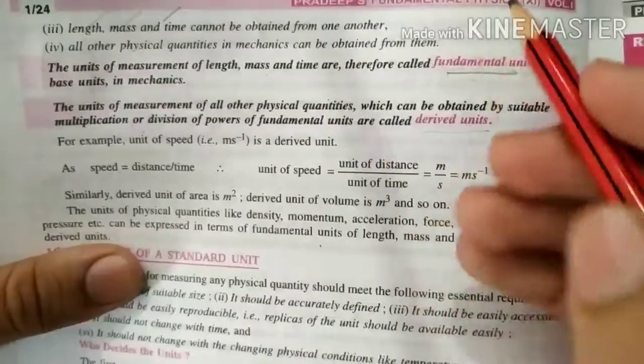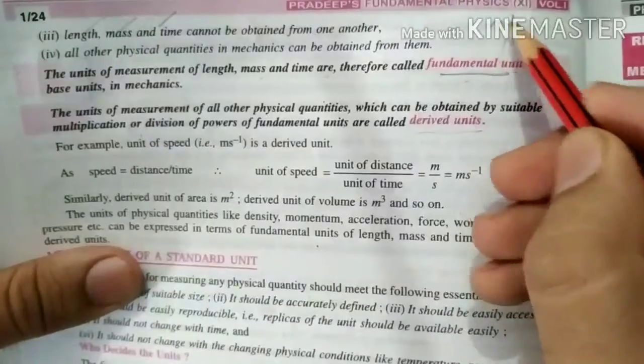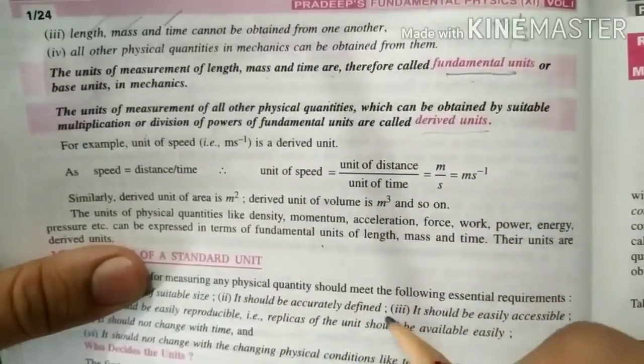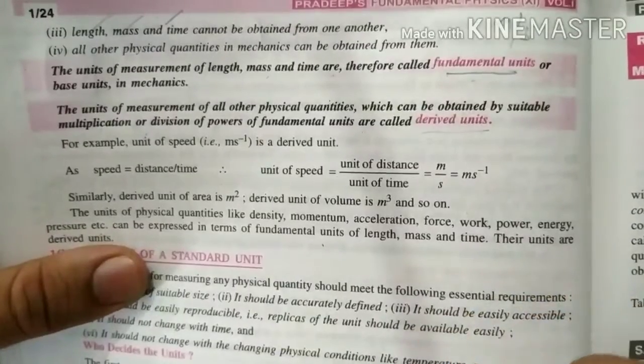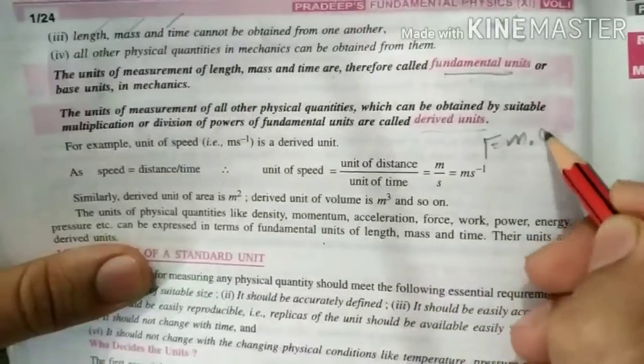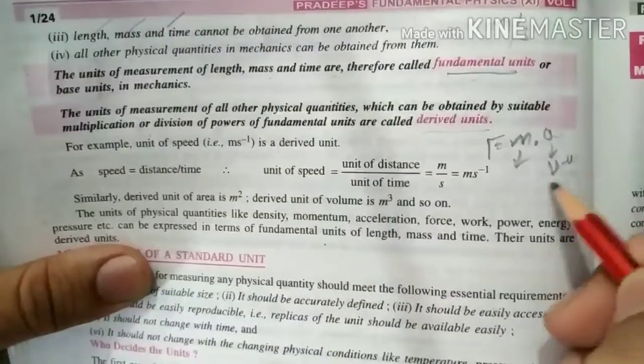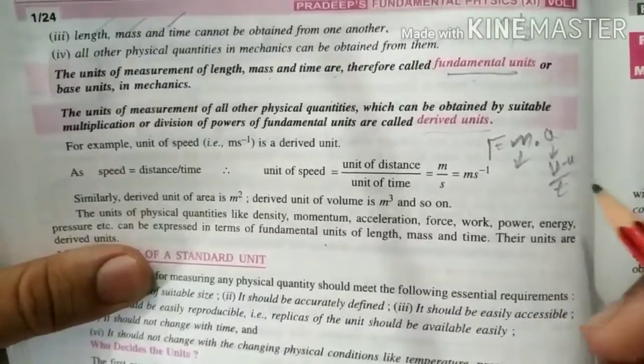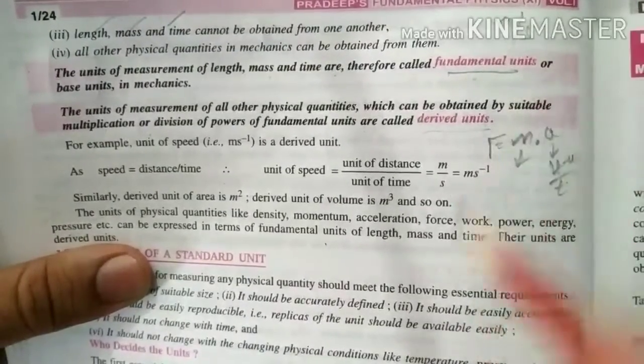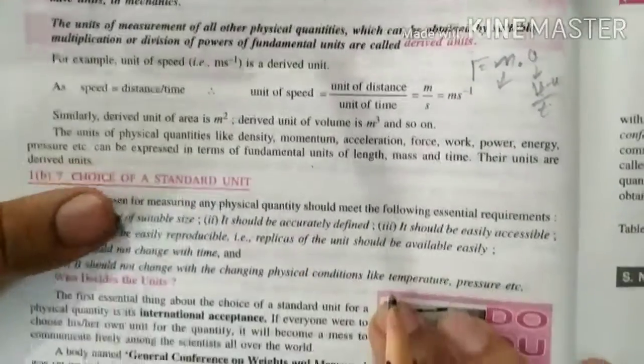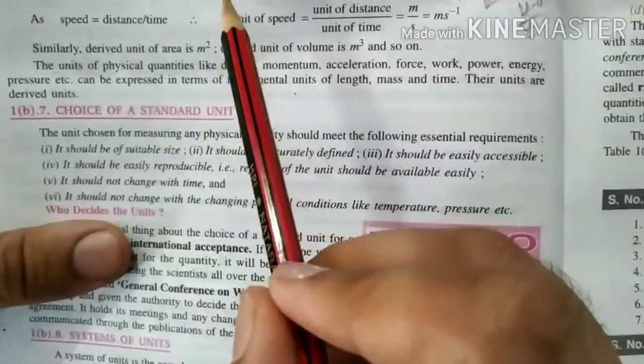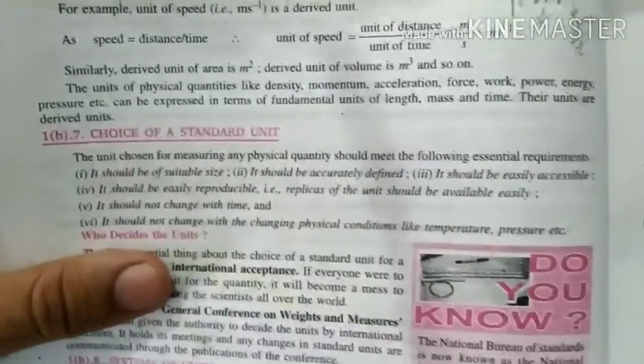Like speed, you know the formula of speed? Distance over time. That is the derived unit. Velocity or force, mass into acceleration, v by time, v minus u by time. So this is why the fundamental unit is the basic, and the rest of the quantities are derived units.